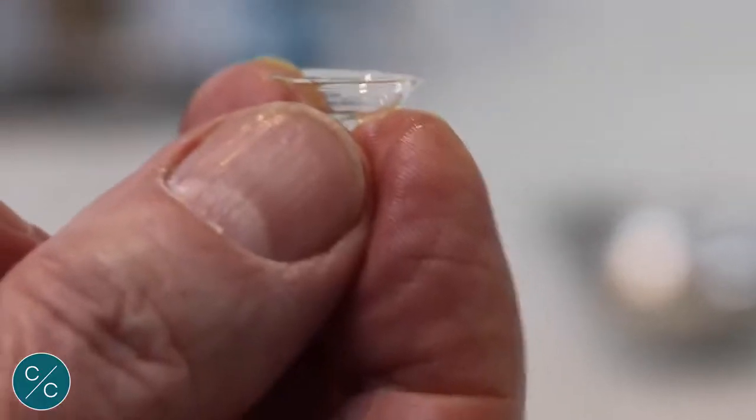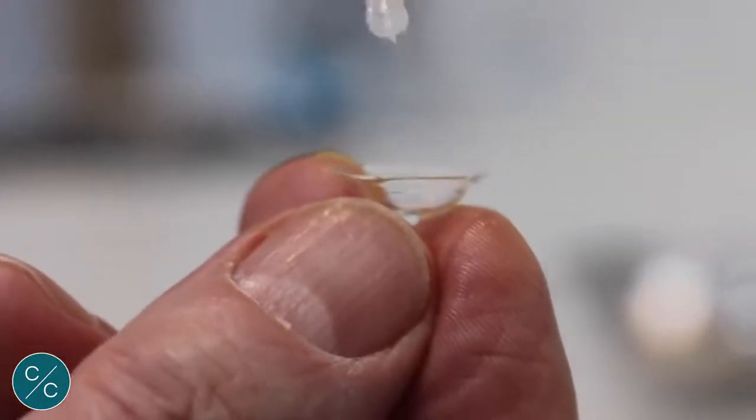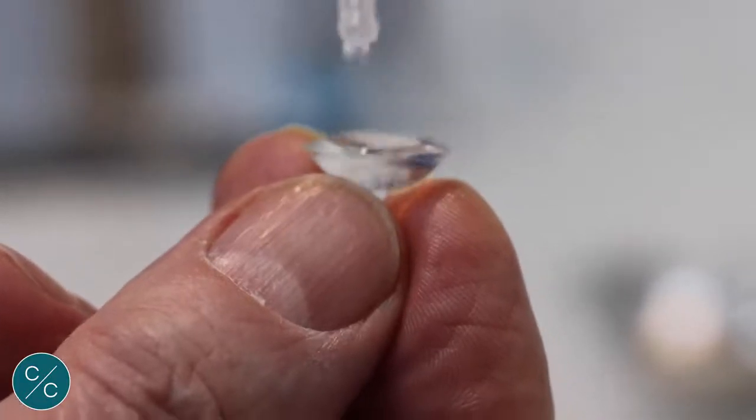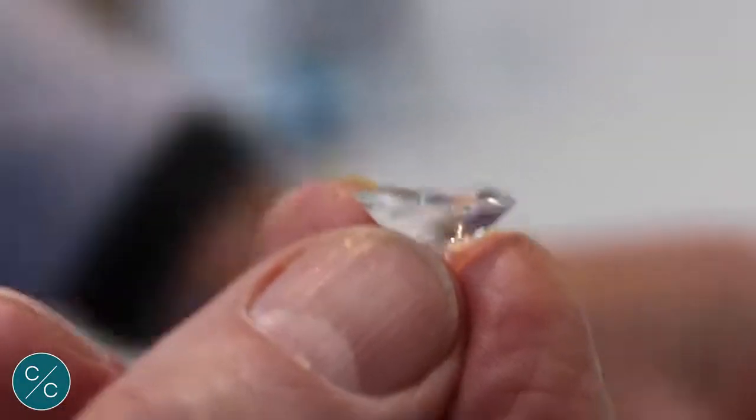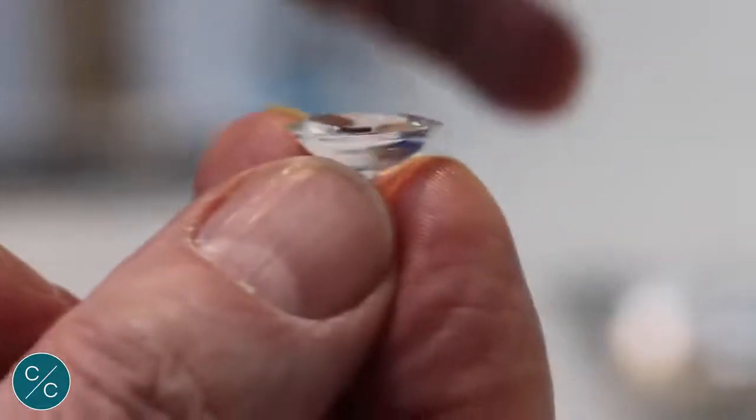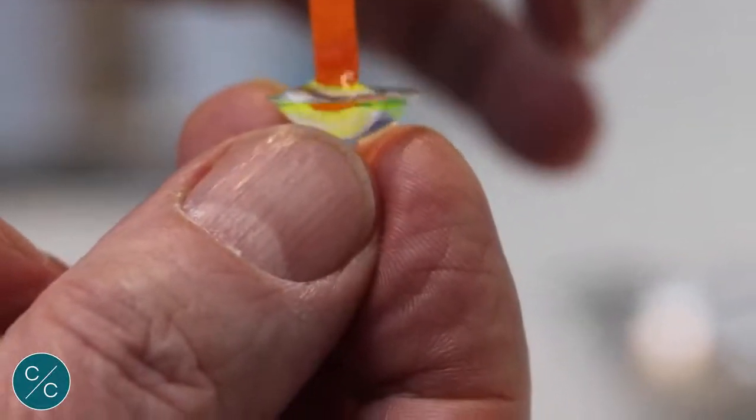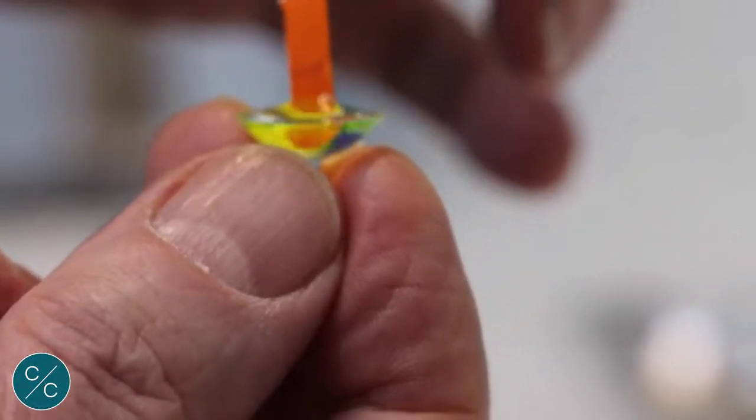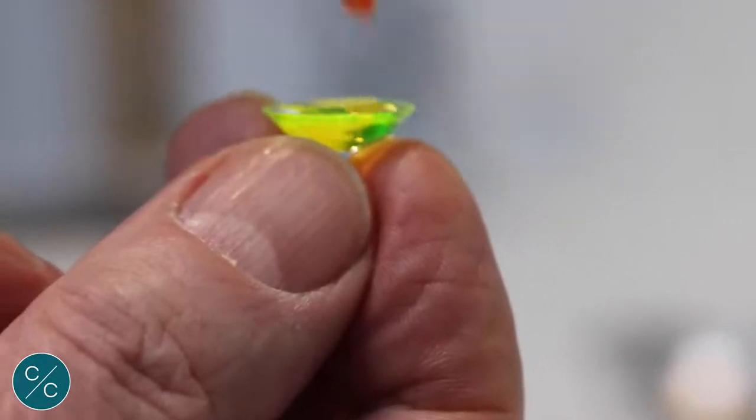So we take our lens, fill to overflowing with saline, take our Fluorescein strip and introduce Fluorescein into the bowl of the lens and we're ready to go.